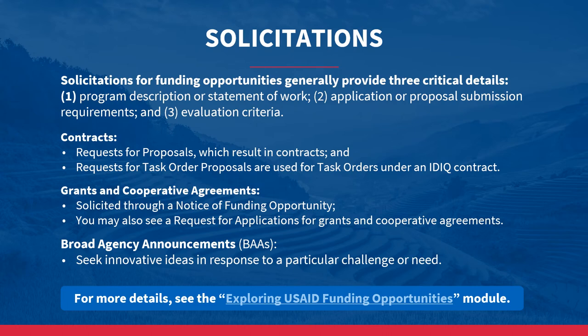There are different types of solicitations. Contracts are solicited through Requests for Proposals, or RFPs. Task orders under an indefinite delivery, indefinite quantity contract are issued under an RFTOP. Grants and cooperative agreements are solicited through a Notice of Funding Opportunity, or NOFO. You may also see use of a Request for Applications, or RFA, which results in a grant or cooperative agreement. If an applicant wins the award, they will sign an agreement with USAID.